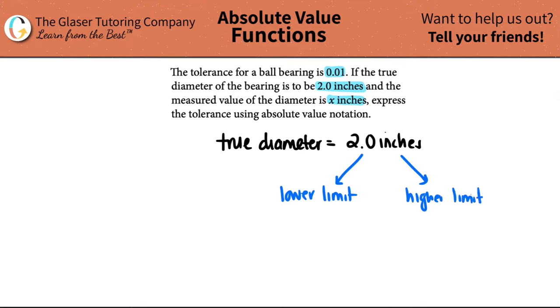Just like we said, the higher limit would be adding that tolerance. So it'd be 2.0 inches plus the additional 0.01. This is the absolute highest that you can be. The lower limit would be the 2.0 minus the 0.01 tolerance. And that's the absolute lower limit.